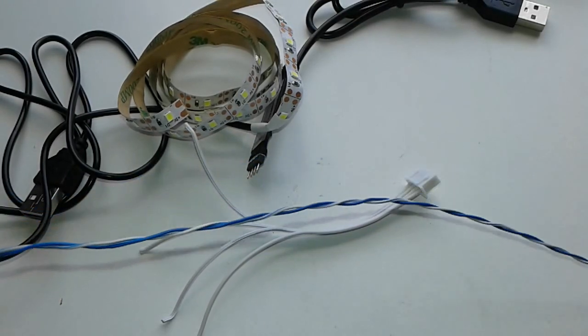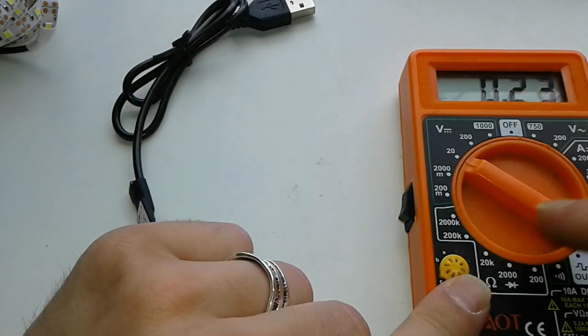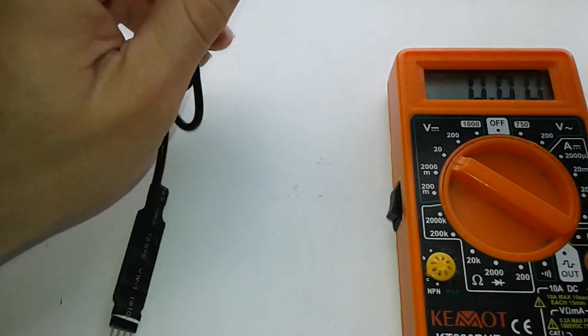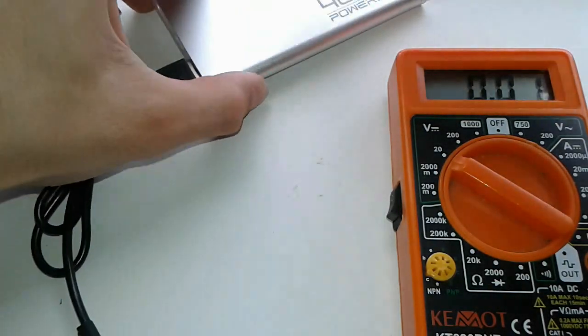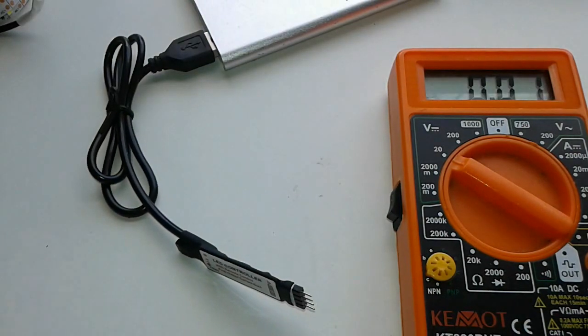All right, so let's get started. First thing first, we're gonna connect the multimeter into the 20V section here. We're gonna plug in the USB controller into the power outlet and we're gonna measure these terminals.